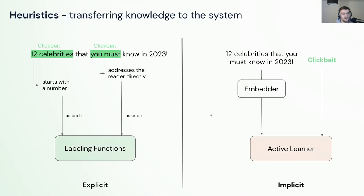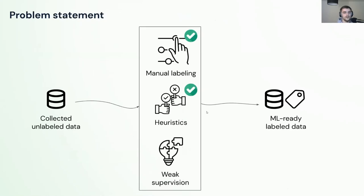We've now looked at both explicit and implicit heuristics. They don't have to be perfect — they're just heuristics. Now we have a bunch of heuristics on our data that we can all aggregate into a single label, and this is going to be done by weak supervision. We've covered manual labeling and heuristics; weak supervision is the last part of the puzzle.